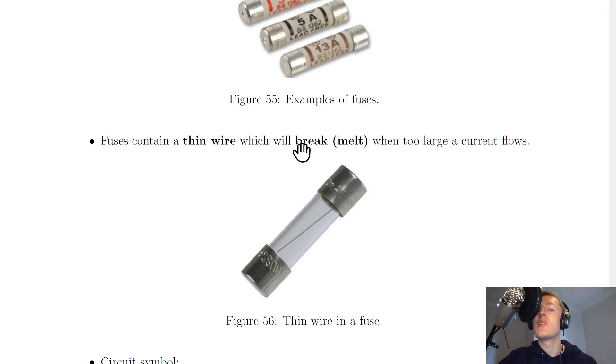So what we need to say instead is that the fuse breaks or it melts, because that's what is actually happening. The wire inside the fuse is melting, and that is breaking the circuit. So use one of those words to describe what happens to a fuse when too large a current flows.